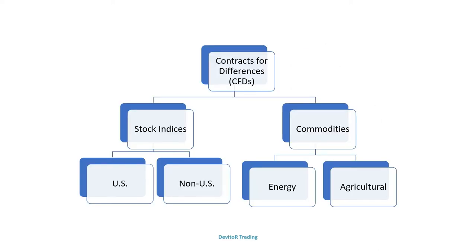Let's start learning about what you are trading. Contracts for Differences, CFDs, are a derivative of U.S. futures contracts. Broadly speaking, they cover both U.S. and non-U.S. stock indices, energy commodities such as oil and natural gas, and agricultural commodities such as soybean, cocoa, coffee, cattle, pork bellies, and so on. The strategy in our test video and being discussed here is for the NASDAQ 100 stock index.